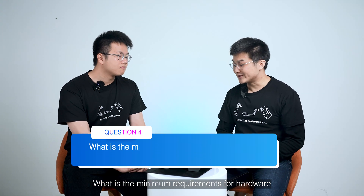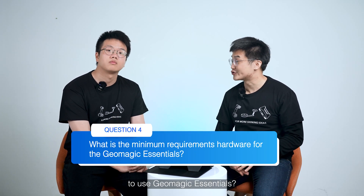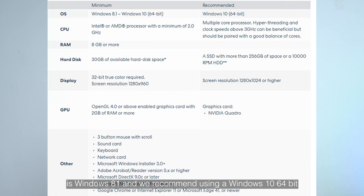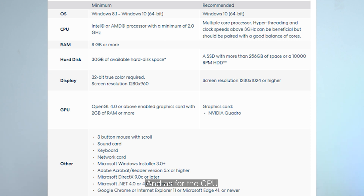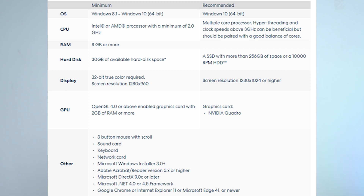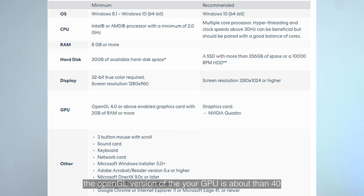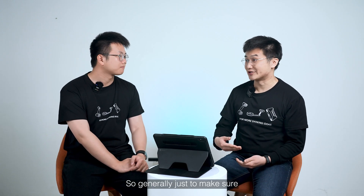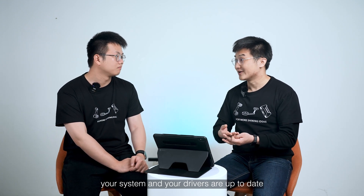What is the minimum hardware requirement to use Geometric Essentials? For the OS, the minimum requirement is Windows 8.1, and we recommend using Windows 10 64-bit. For the CPU, any CPU is fine, but make sure the minimum frequency is above 2.0 GHz. You need at least 8 GB of RAM. For the GPU, make sure the OpenGL version is above 4.0 and it has at least 2 GB of VRAM. Generally, make sure your system and drivers are up to date.